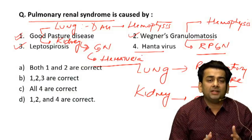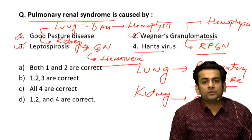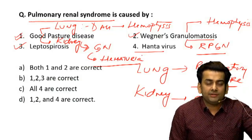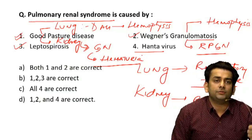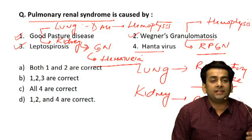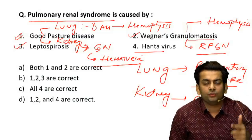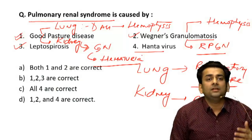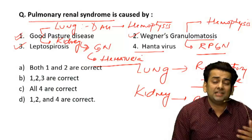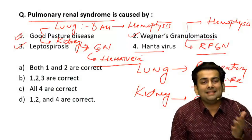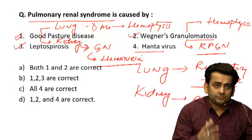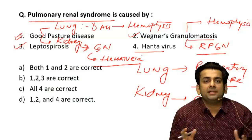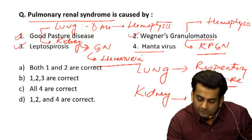In a tropical country like India, leptospirosis can practically involve each and every organ. It can cause CNS involvement with meningoencephalitis, lung involvement with acute respiratory distress syndrome, GI tract involvement, hepatitis, and kidney involvement causing renal syndrome. It notoriously involves both the liver and the kidney and can lead to both liver failure and renal failure, making it a multi-systemic disease.